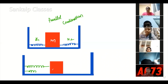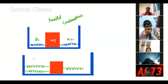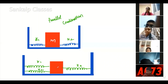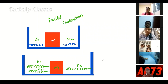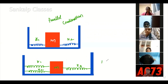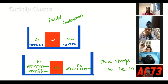This is spring 1, spring 2, and spring 3 — with spring constants K1, K2, K3. Here, a block is connected with three springs. These three springs are said to be in a parallel combination.